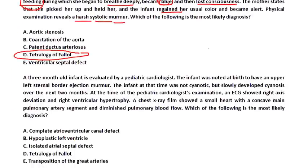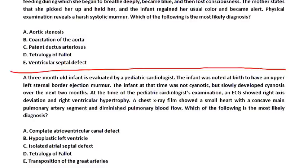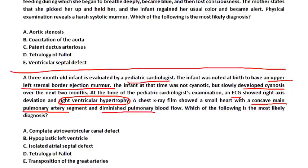One last clinical vignette: A three-month-old infant evaluated by a pediatric cardiologist was noted at birth to have an upper left sternal border ejection murmur. The infant was not cyanotic at birth but slowly developed cyanosis over two months. The EKG showed right axis deviation and right ventricular hypertrophy. The chest x-ray showed a small heart with a concave main pulmonary artery and diminished pulmonary vascular markings. What is the most likely diagnosis? — Tetralogy of Fallot.